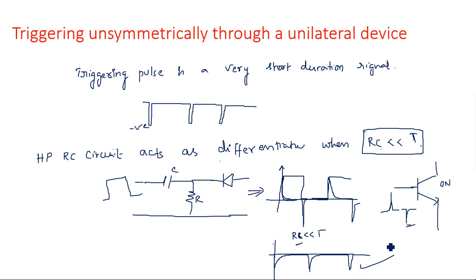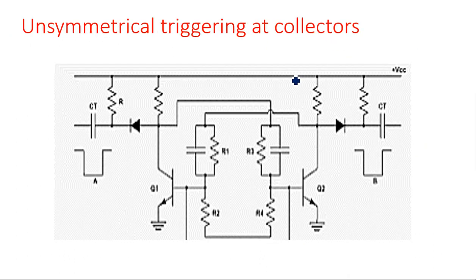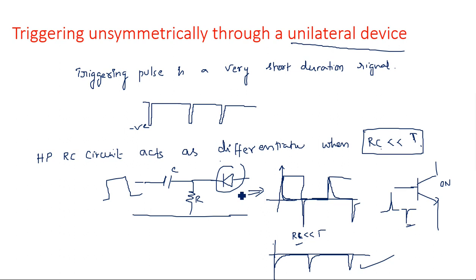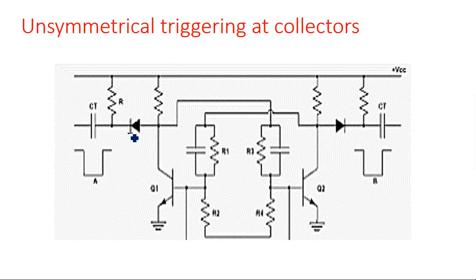Only the negative signal passes through, giving an output waveform consisting of pure negative-going spikes. This signal is what is needed for the triggering pulse. This demonstrates the importance of a diode — a unilateral device — as a rectifier. The same circuit is remodeled for unsymmetrical triggering at collectors with a diode: capacitance, followed by resistor, then diode in the reverse direction at each collector input.